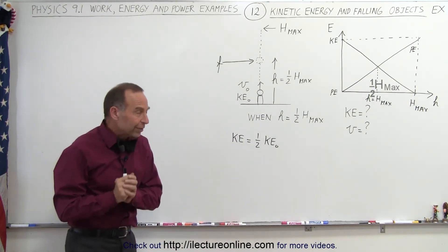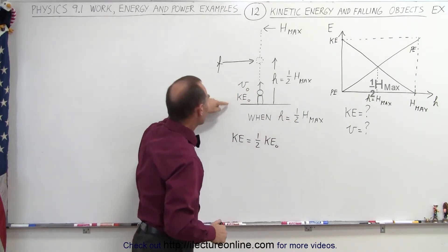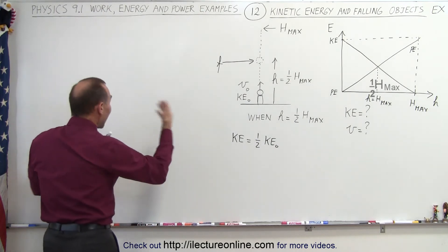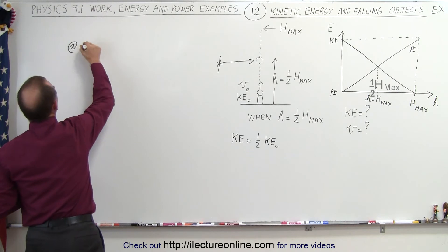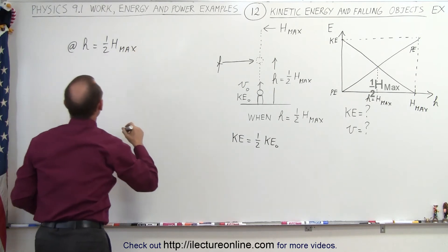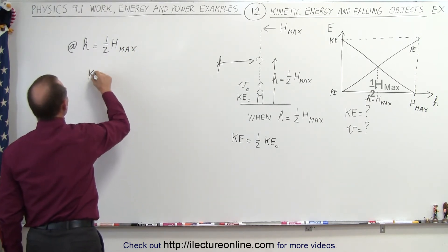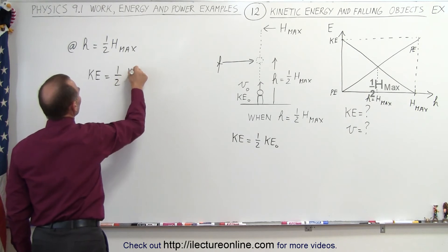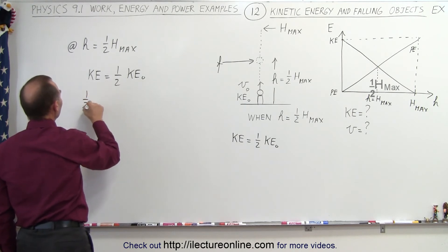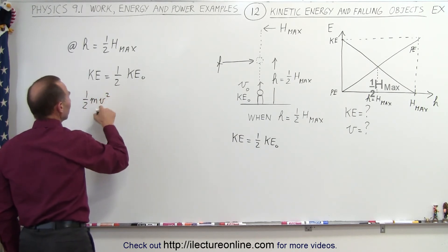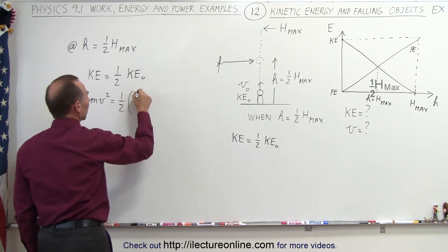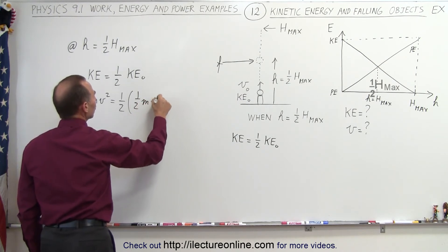Now for the second part, we're trying to find the velocity when the object has reached its halfway point. So what we can say is that at the halfway point, at H equals one-half H-max, we can see that the kinetic energy will be one-half the original kinetic energy. And of course, the kinetic energy there will be one-half MV squared, the velocity at that moment in time, and that would be equal to one-half, the initial kinetic energy is one-half MV initial squared.